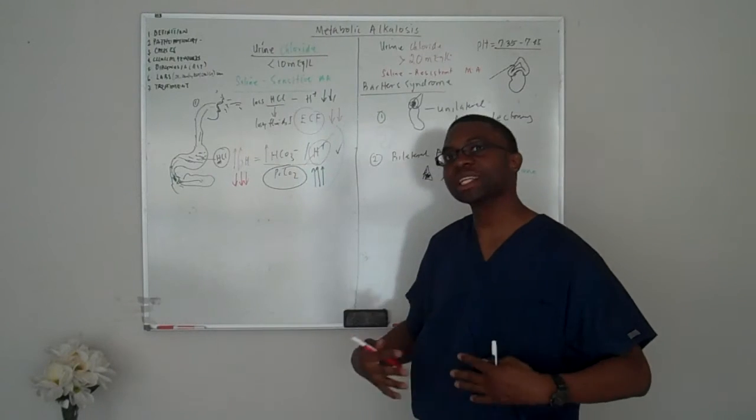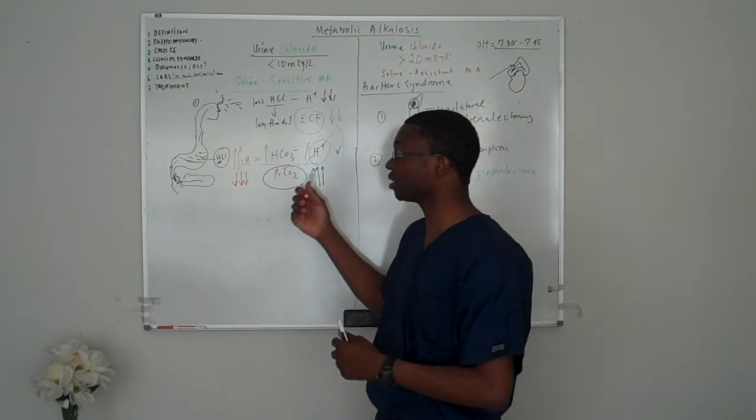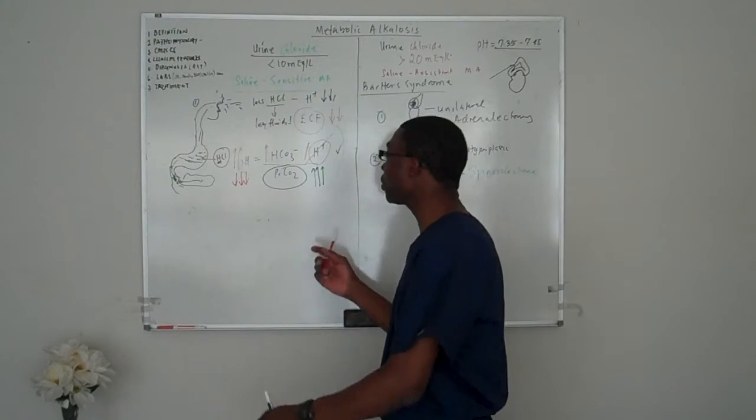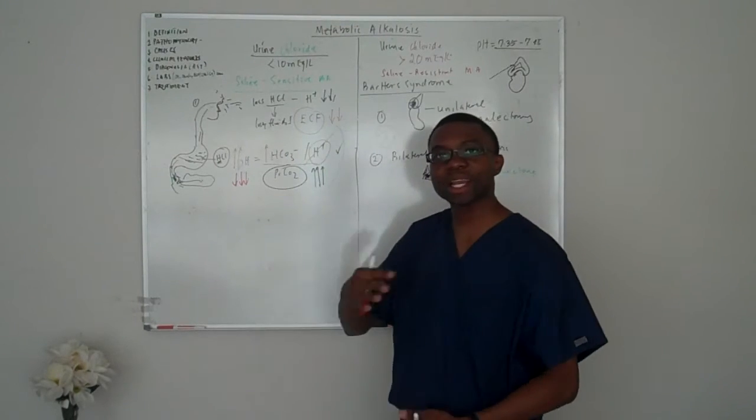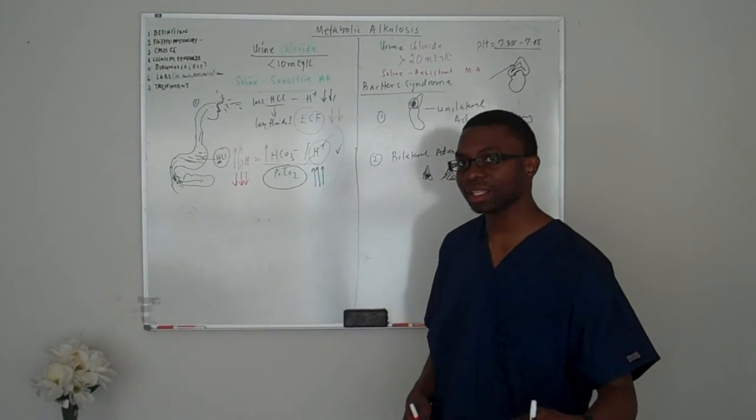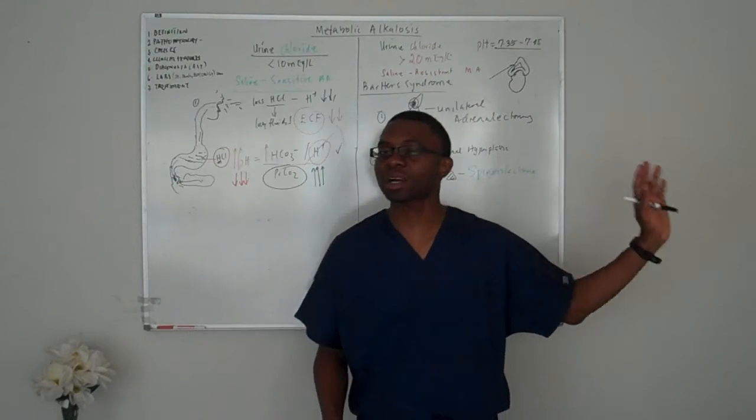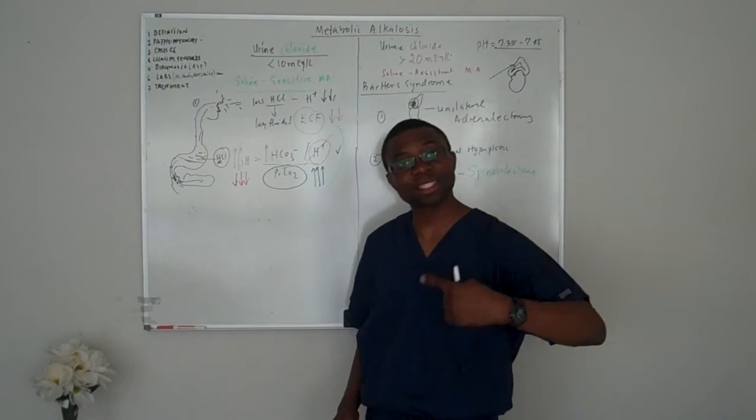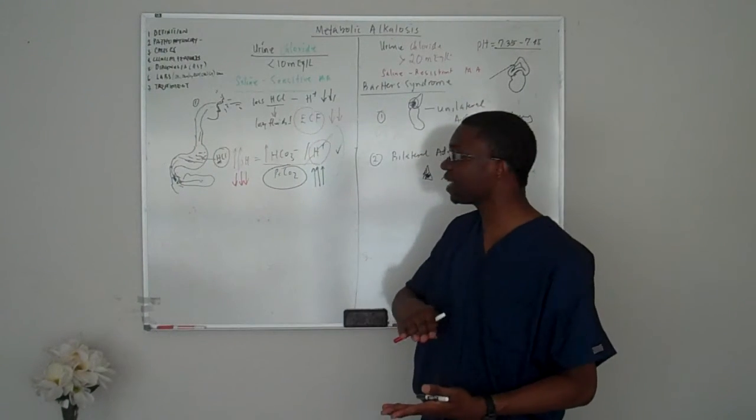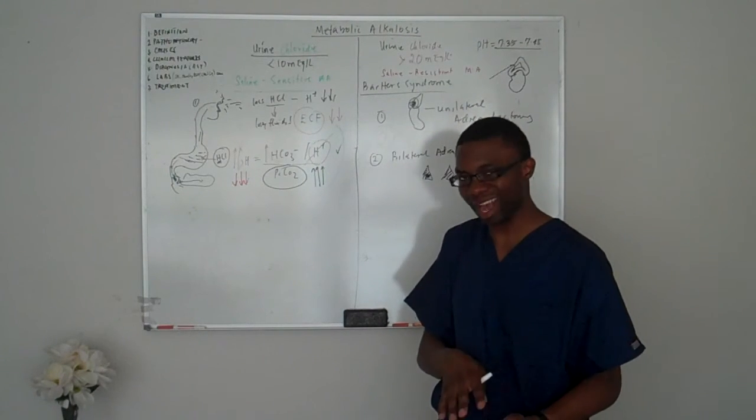Because I'm retaining a lot of bicarb and I'm losing a lot of hydrogen ions. If my kidney refuses to lose its bicarb, the only way I can fix this is to retain a lot of CO2. And when I retain CO2, we call it hypoventilation. So the patient is not breathing as fast. Remember in metabolic acidosis, the patients actually hyperventilate to get rid of too much CO2. In this case, they retain it, and that is the respiratory compensation.